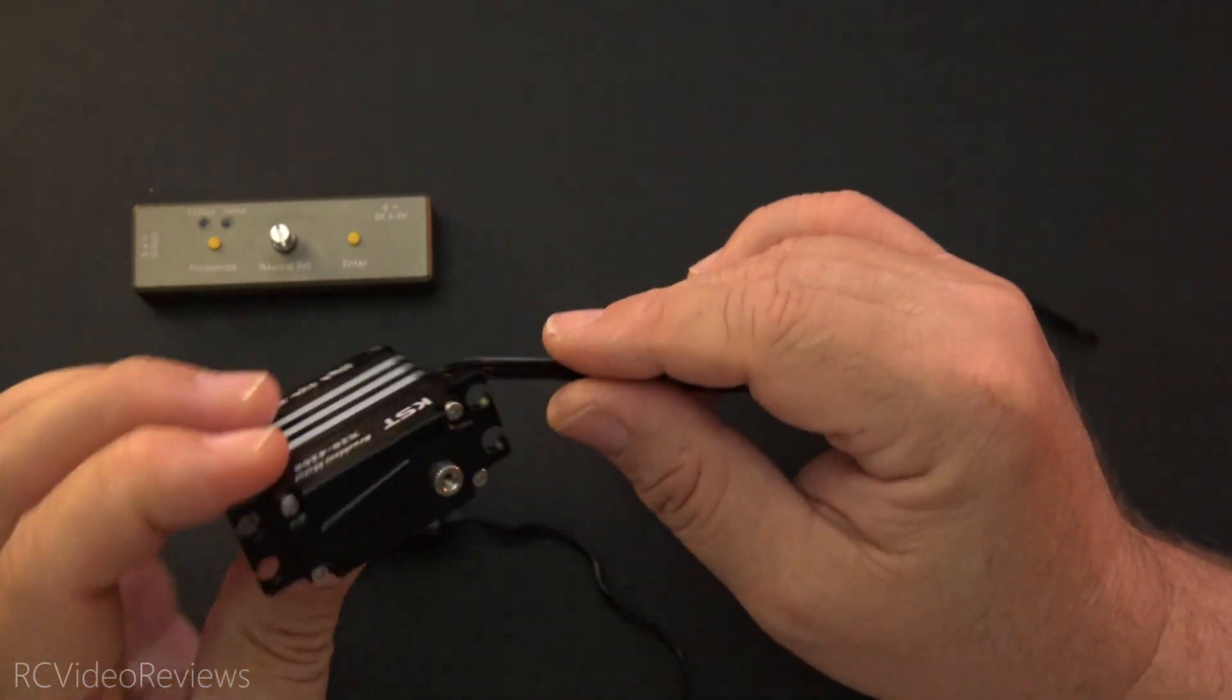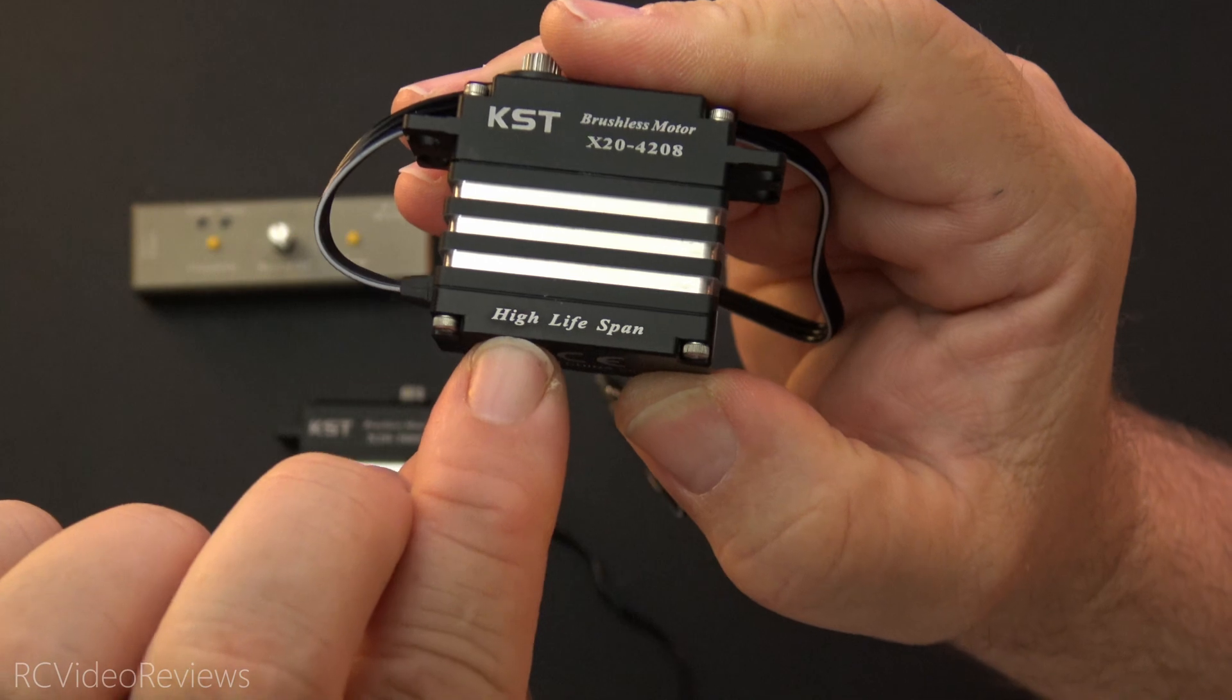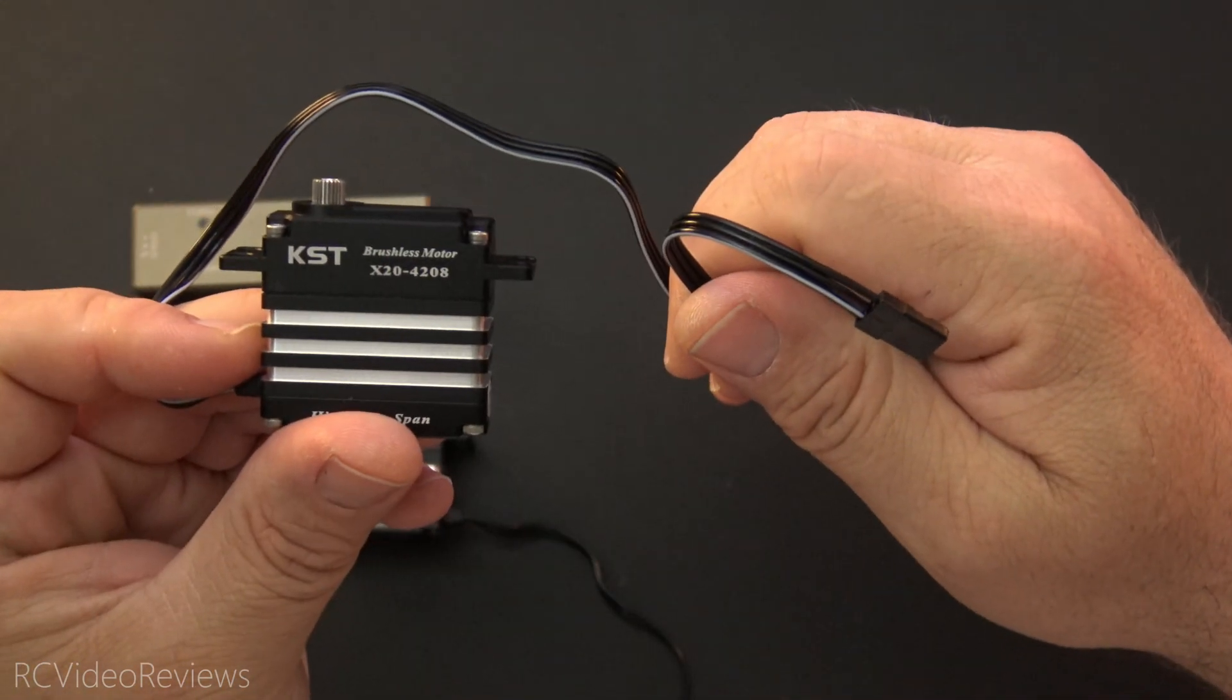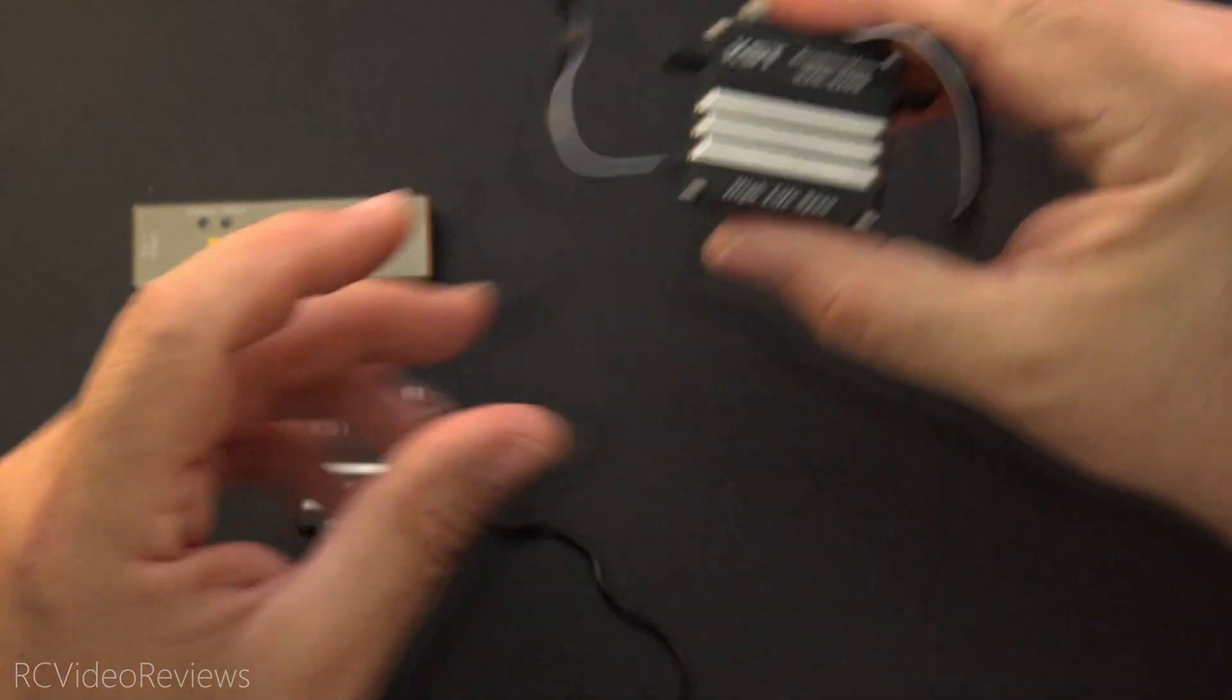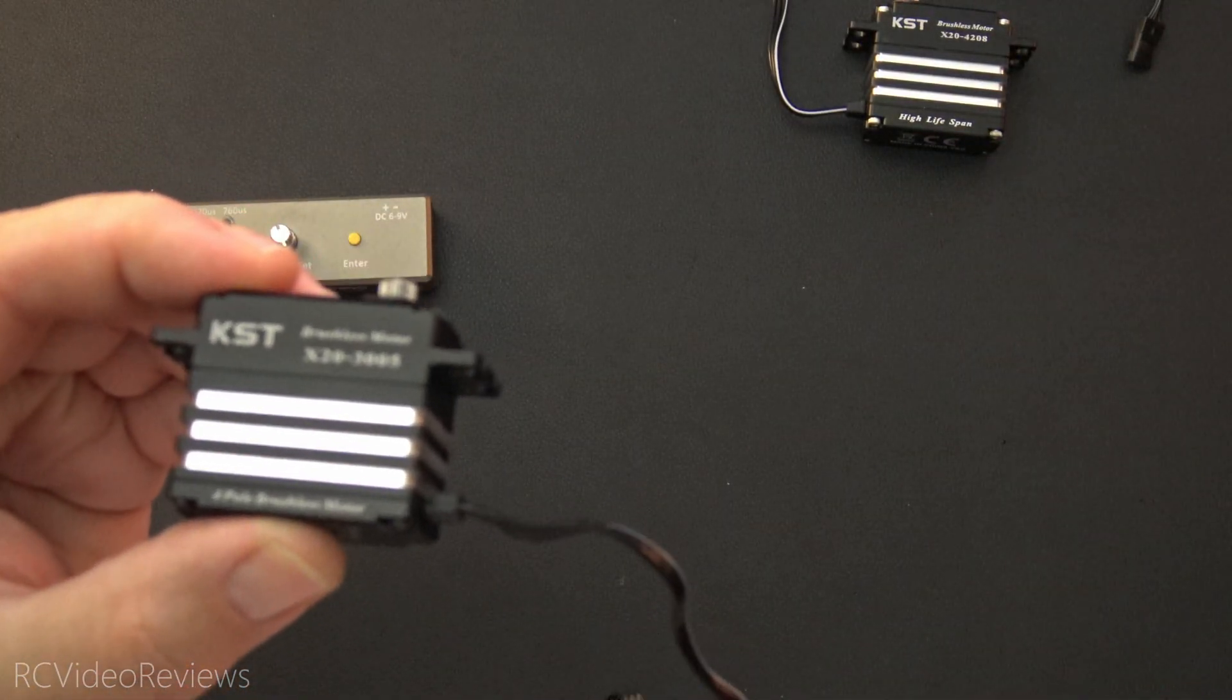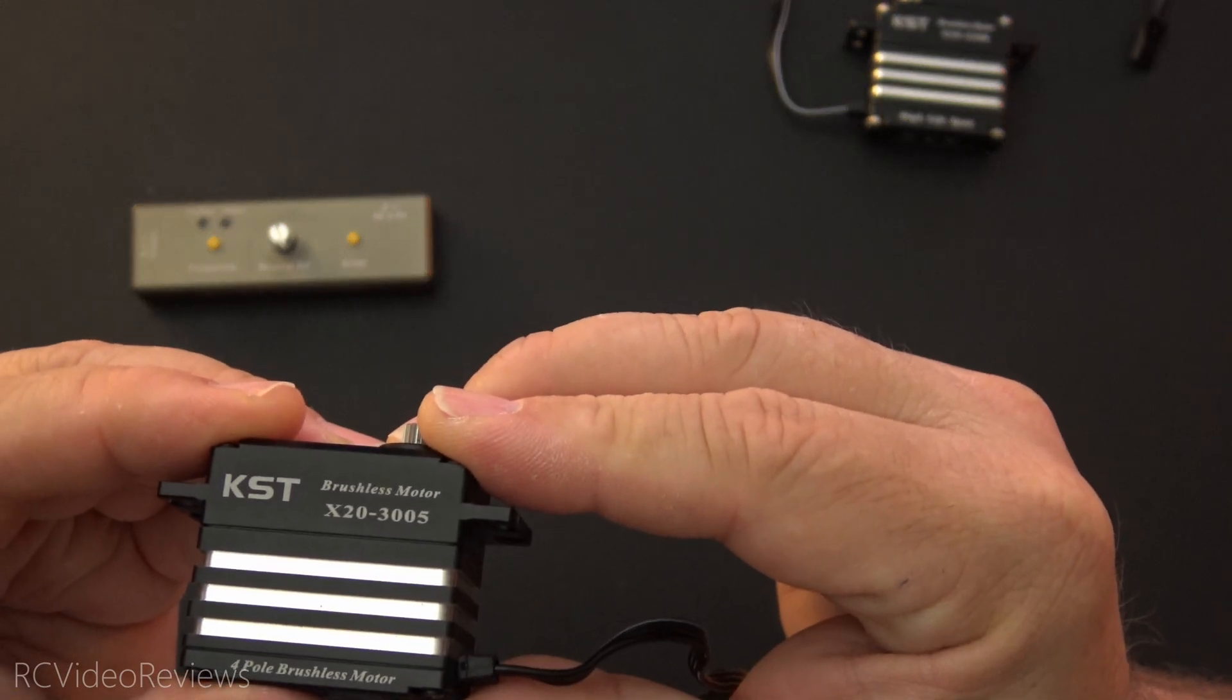Of course, these are ball bearing servos, and they weigh about 80 grams. KST also advertises them as high lifespan servos. That's it on the 4208, obviously a very high end servo. In my application, I'll be putting 4208s in for the rudder and ailerons, and then I'll be switching over to the 3005, which is a little brother for the elevators, because this particular model has two elevator servos. I'm just going to use one of these 3005s on each side.